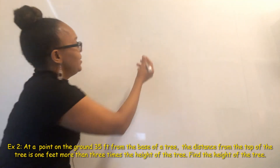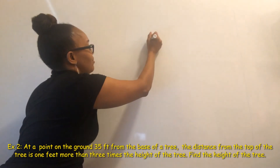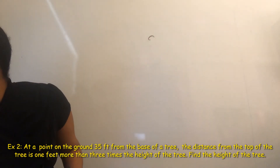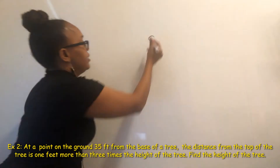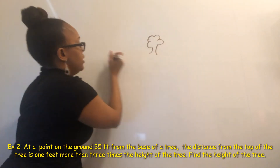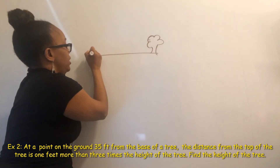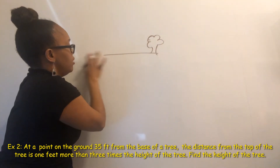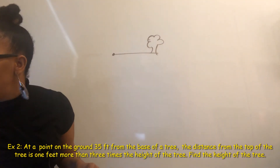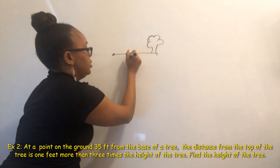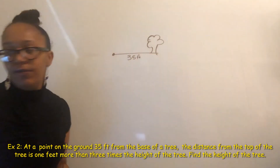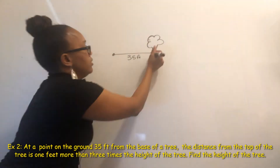We need to draw a picture. We have a tree, and there's a point on the ground. At a point on the ground, 35 feet from the base of the tree — so this distance is 35 feet, from that point to the base of the tree.